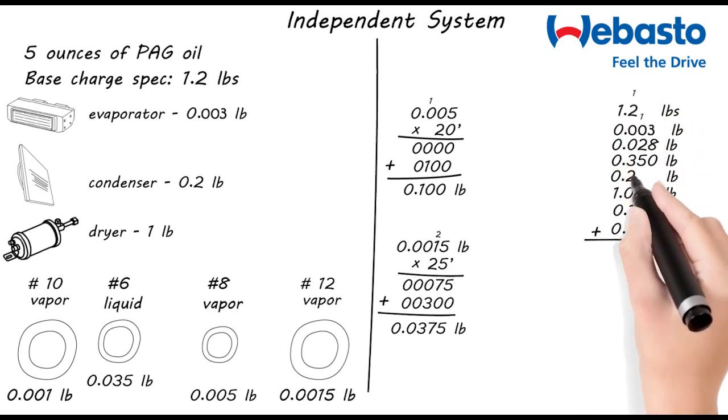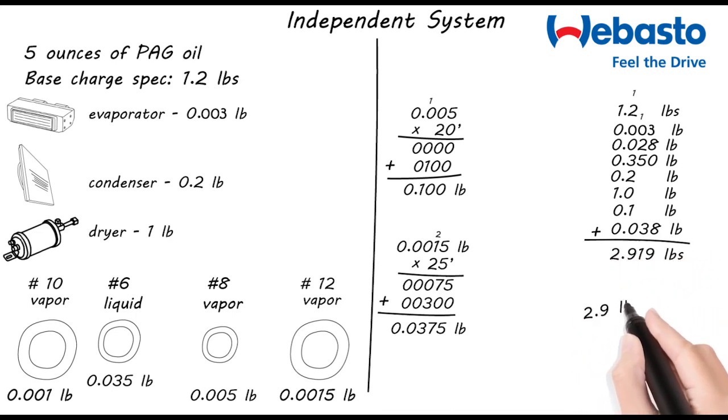Now we just add that up and we come up with 2.9 pounds of refrigerant and 5 ounces of PAG oil. Remember, this is just a ballpark figure that'll get us close. We will still adjust the refrigerant charge to achieve that 10 to 15 degrees of subcooling.